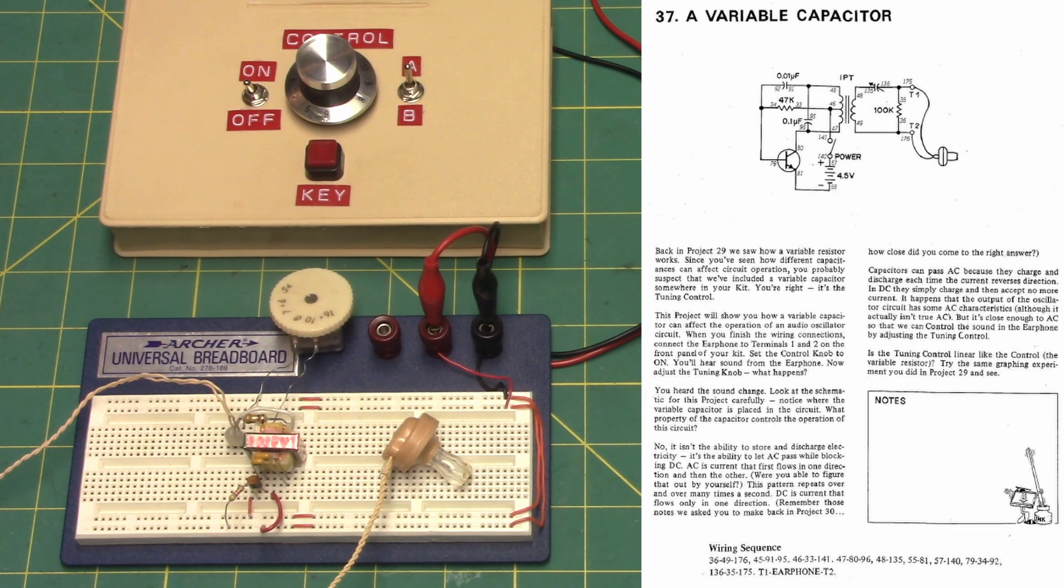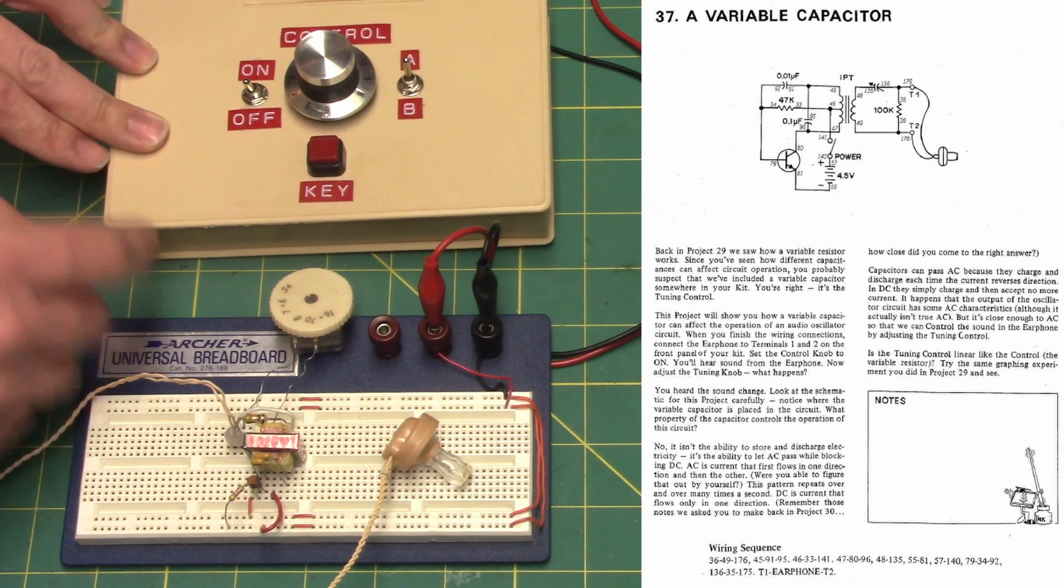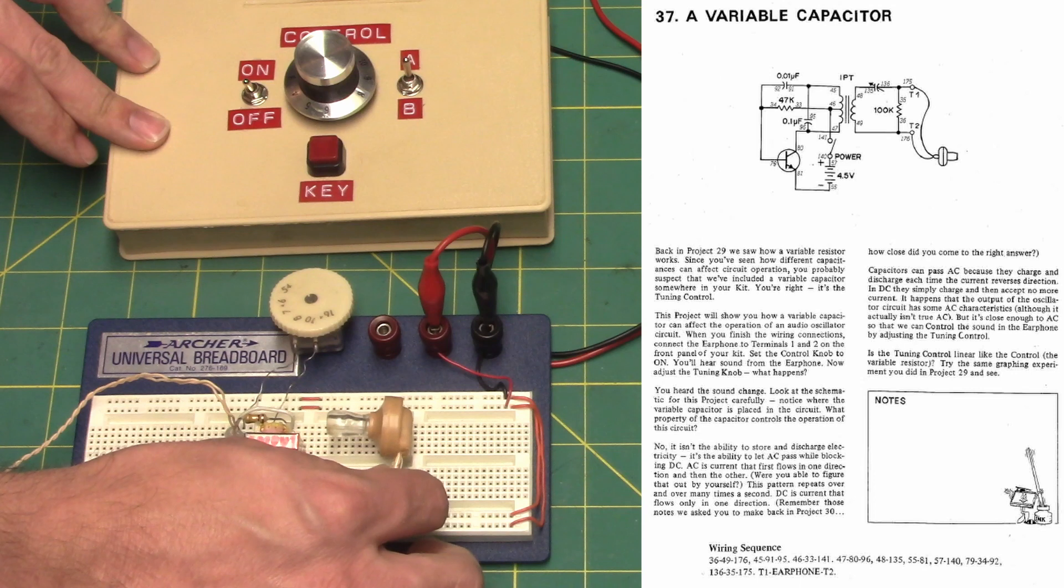This project will show you how a variable capacitor can affect the operation of an audio oscillator circuit. When you finish the wiring connections, connect the earphone to terminals 1 and 2 on the front panel of your kit.